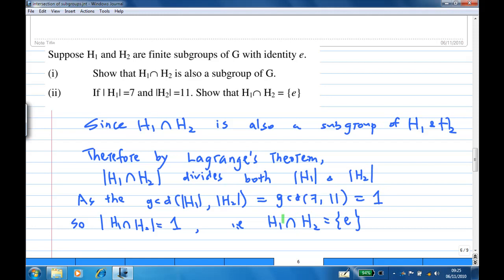So, the subgroup H1 intersect H2 consists of only the identity element. Let's finish the proof. That is the end of the recording.